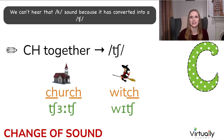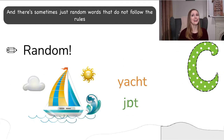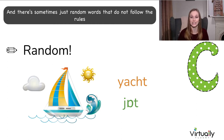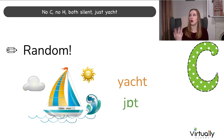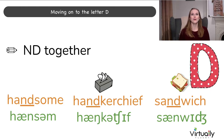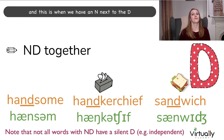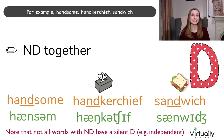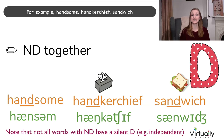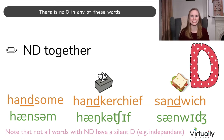We can't hear that K sound because it has converted into a CH. And sometimes there are just random words that do not follow the rules — for example: yacht. No C sound, no H sound, both silent — just 'yacht'. Moving on to the letter D: this is when we have an N next to the D. For example: handsome, handkerchief, sandwich. There's no D sound in any of these words.